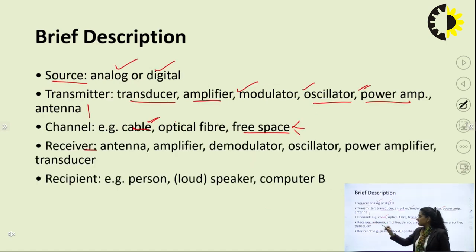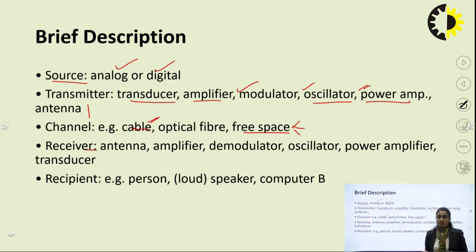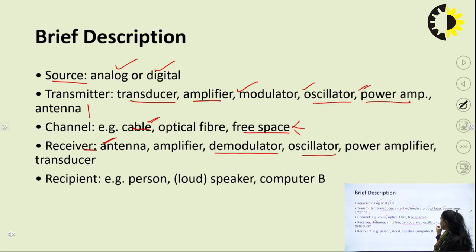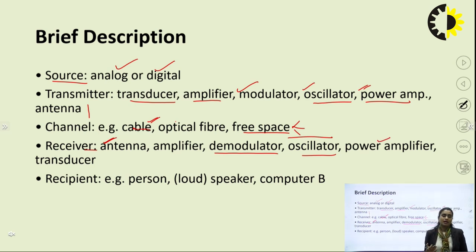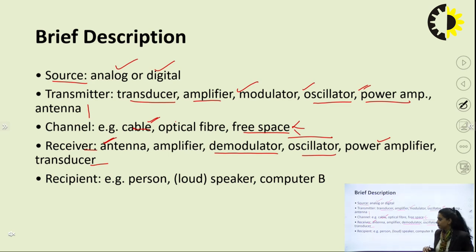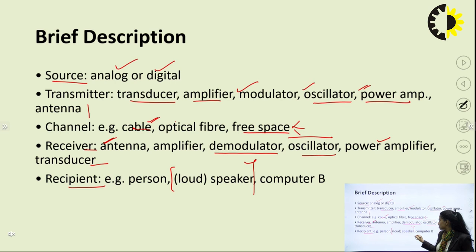The receiver will undo all the processes that occurred at the transmitter. If modulation occurred at the transmitter, the receiver will do demodulation; if multiplexing occurred, it will do demultiplexing. It will have a receiving antenna, an oscillator needed at several stages like demodulation for detection of the signal, power amplifiers to enhance signal quality, and a transducer to convert electrical signals back into human-understandable form — such as converting electrical pulses back into audio. Finally, the end destination or recipient could be a person, a monitor screen, or a loudspeaker.